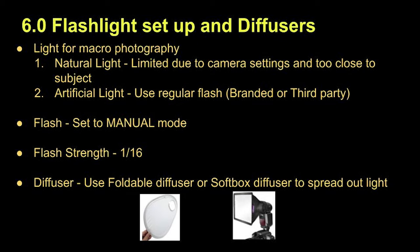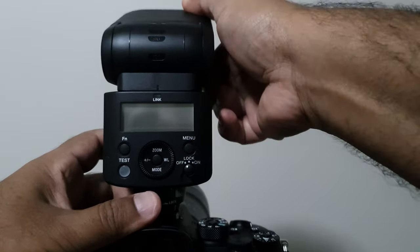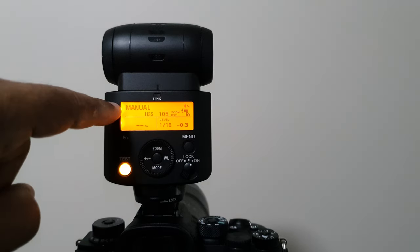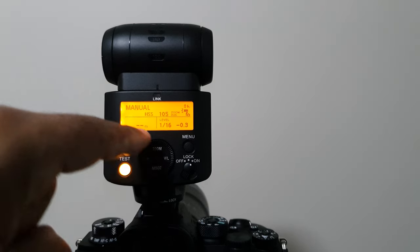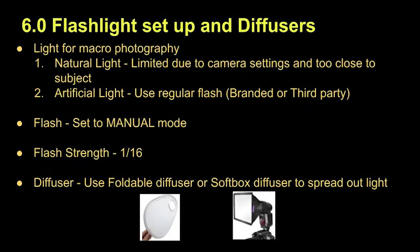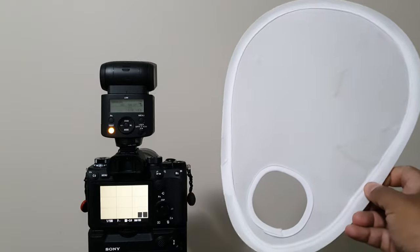Let's move to flashlight setup and diffusers. In macro photography, you can use natural light and artificial light. Natural light is limited due to camera settings and being too close to the subject. To add artificial light, use a regular flash — either branded or third party. Set your flash to manual mode. Flash strength: set to 1/16th and take a test shot, then adjust these settings as required. For a diffuser, use a foldable diffuser or softbox diffuser to spread out the light.